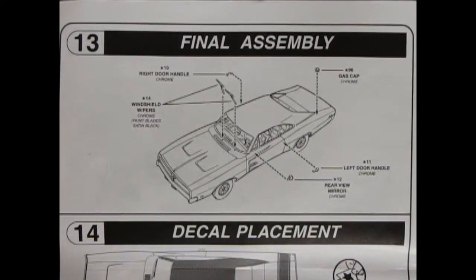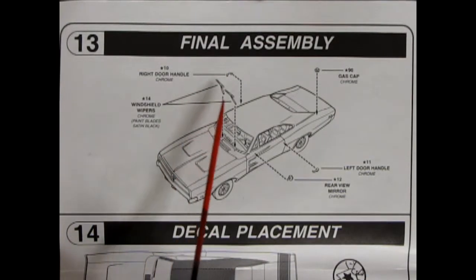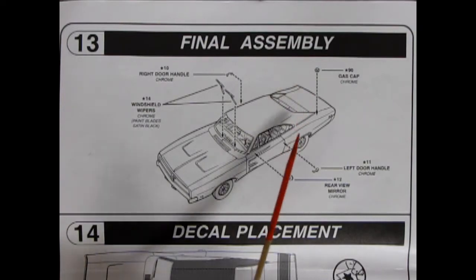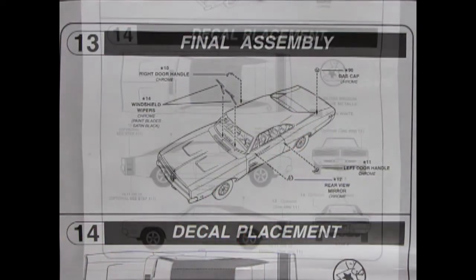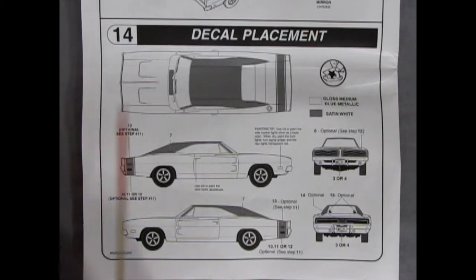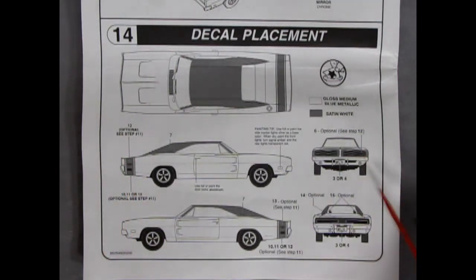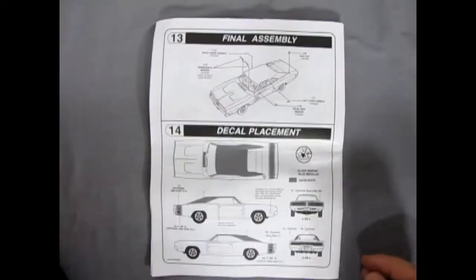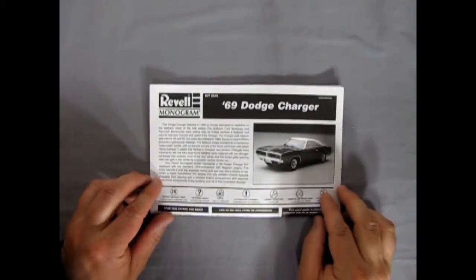Panel thirteen brings us to our final assembly which of course are the windshield wipers and the door handles and mirror and the awesome gas cap popping onto our body. Finally, panel fourteen is our decal placement and here you get your choice of the optional stripes. There's three different colors to choose from and then it's showing you all the different decals and everything that goes on there. And that brings us to the conclusion of our instruction sheet. So now let's go and see all the plastic parts.